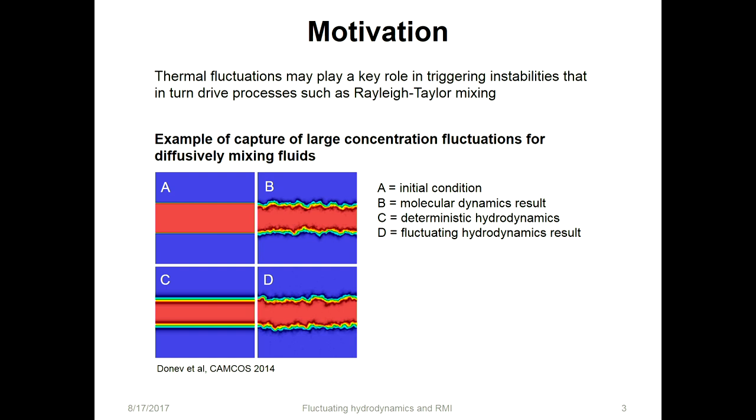Thermal fluctuations might play a key role in triggering instabilities. If you're studying onset in super detail, then you want to capture these. This is the initial condition, a CFD result, an MD result which captures these perturbations, and then a fluctuating hydrodynamic result which does exactly the same. Just to show that if you include fluctuations in your hydrodynamic model, you're able to do this.